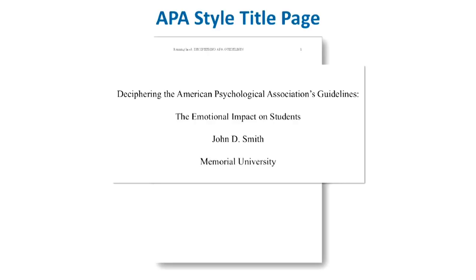When deciding on a title, APA recommends that it not be more than 12 words long, should not contain any abbreviations, and should summarize the main idea of your paper. Your name should appear under the title, followed by the name of your university or institution. If your instructor has specified that you include any additional information, like your course number or section number, be sure to follow their directions.